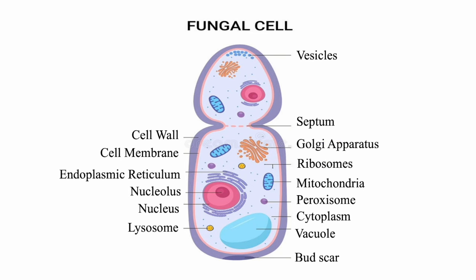Looking at the fungal cell, one can see many common organelles, such as the nucleus, which has DNA containing the cell's genetic material and coordinates cellular activities such as growth, metabolism, protein synthesis, and cellular division. The nucleolus is a distinct region within the nucleus of eukaryotic cells. Mitochondria is the site for cellular respiration, making ATP from glucose and oxygen.